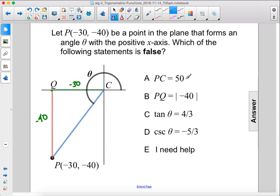So PC equals 50. Well, if we have a 3-4-5 triangle, then yes, this length is going to be 50. We can solve that using the Pythagorean theorem, but this is true, so we can eliminate that one.